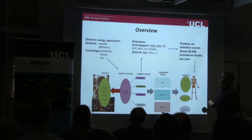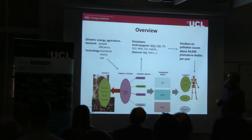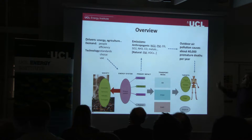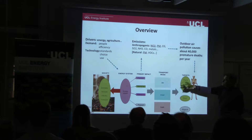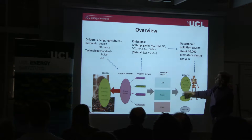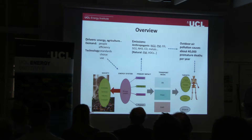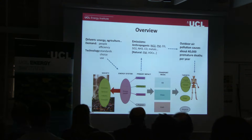We also have to look at a little bit of natural emissions, particularly of particulate matter. Those together, through this transformation to where people live, such as outdoor air pollution, is thought to cause about 40,000 premature deaths a year at the moment.